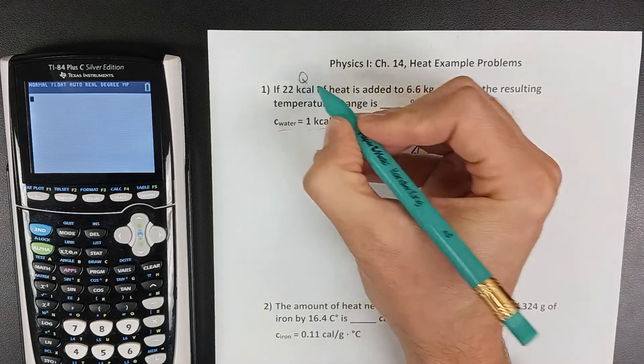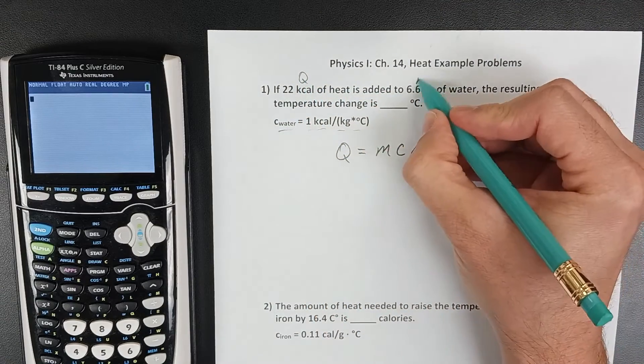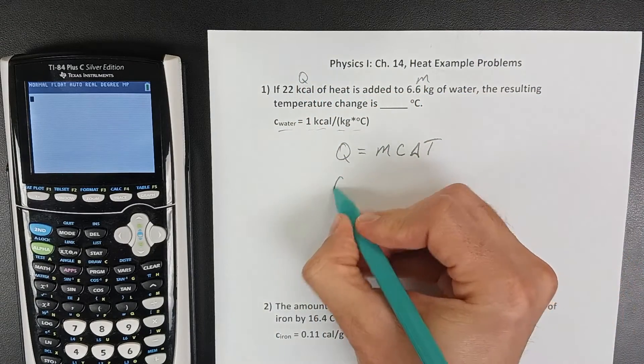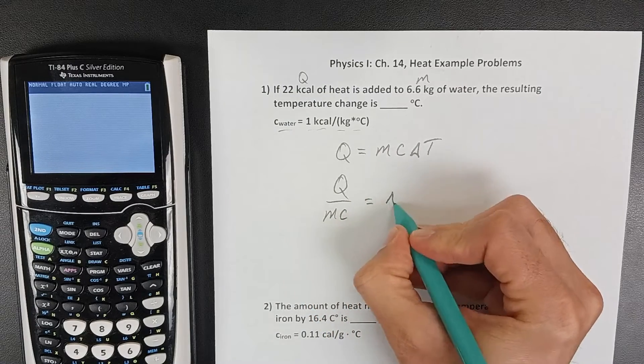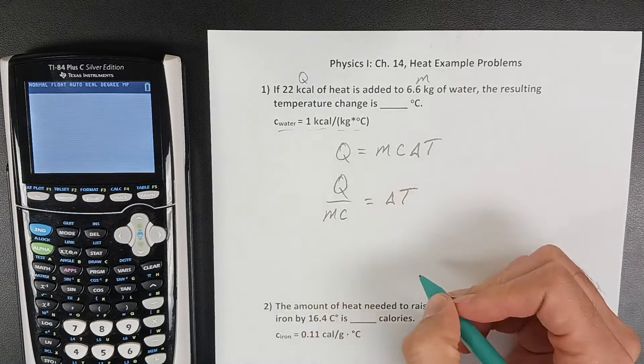We're given Q, we're given the specific heat, and we're given the mass. So this change in temperature would be equivalent to Q divided by mc.